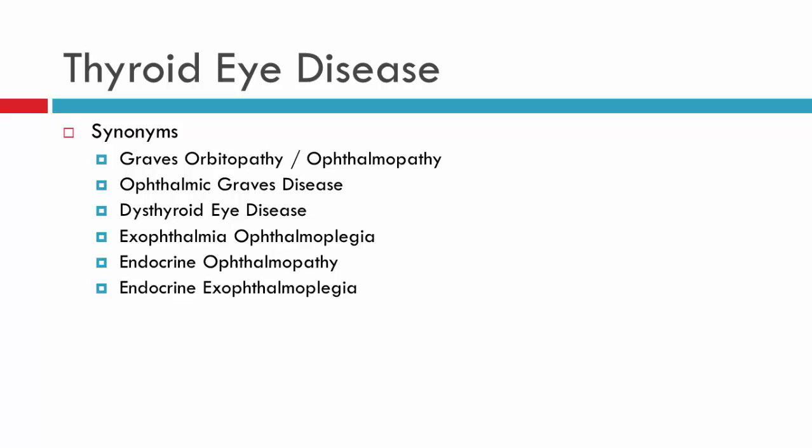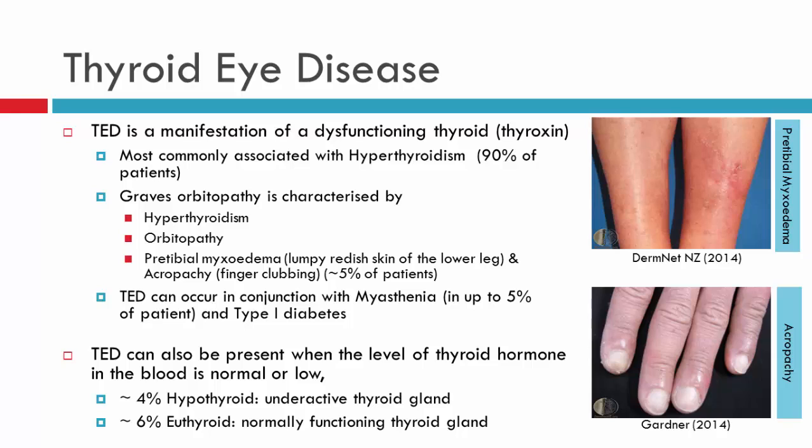Thyroid eye disease is a manifestation of a dysfunctioning thyroid. Almost all patients — 90% — who have thyroid eye disease will be hyperthyroidal or will have hyperthyroidism. As such, the majority of our patients have Graves' Disease.